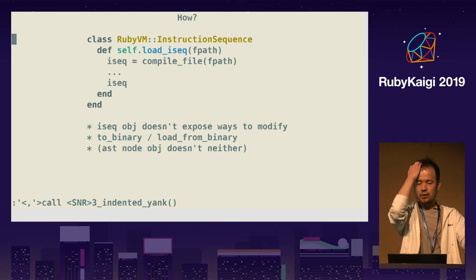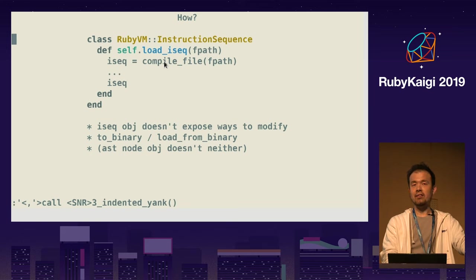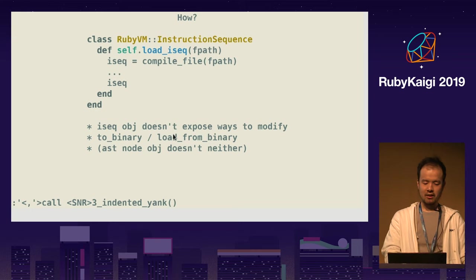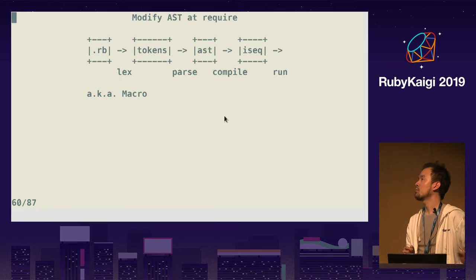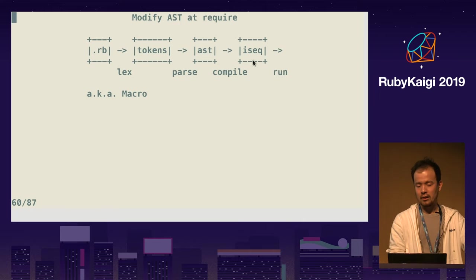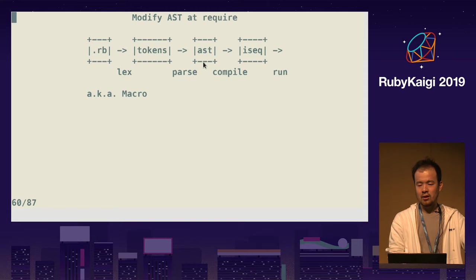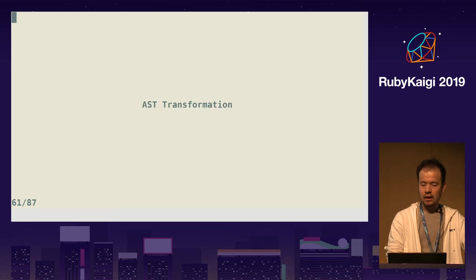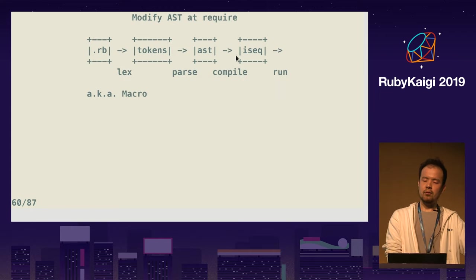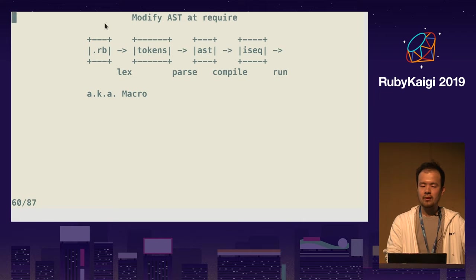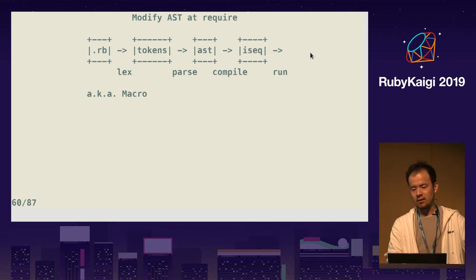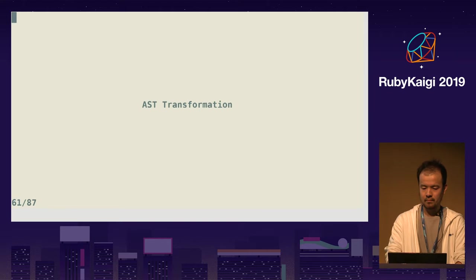Let's try that. Unfortunately, ISEQ does not provide a way to modify ISEQ dynamically. ISEQ provides `to_binary` and `from_binary`, but it's very hard to modify the binary format. So how can we do AST transformation? It's very hard to modify ISEQ directly, and you cannot compile from AST to ISEQ — even though you can modify AST, kind of. The solution is to add a hook here: get the original file, compile and parse to make AST, create another string based on AST, and then compile that to ISEQ.